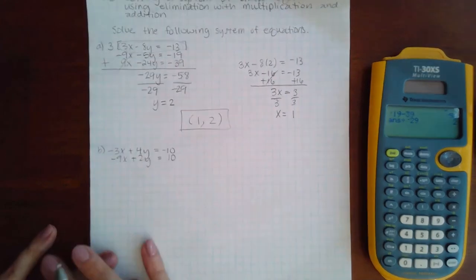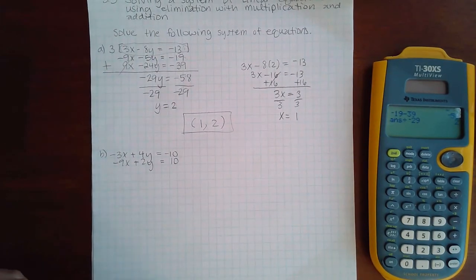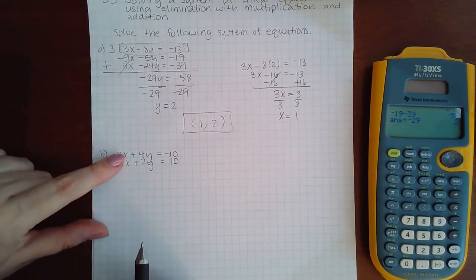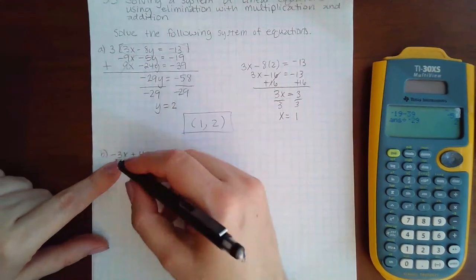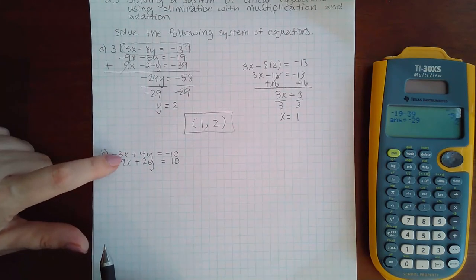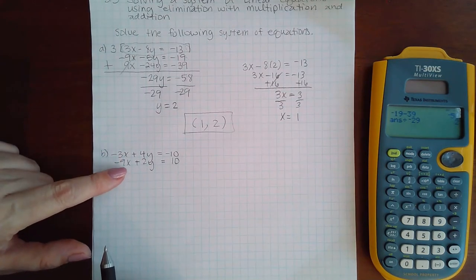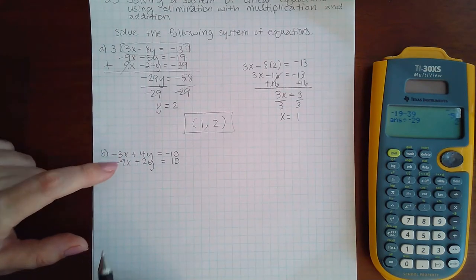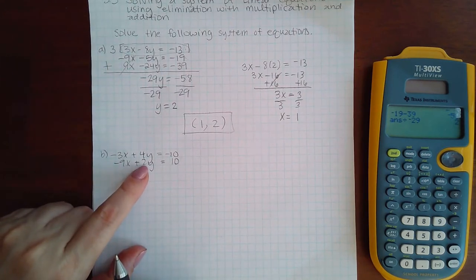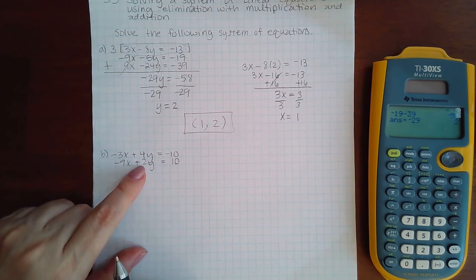Now over here, this one is interesting because there's two things you could do. If you wanted to eliminate the x's, you could multiply the top one by a negative 3 to turn negative 3 times a negative 3 into positive 9, which would be the opposite of this, or you could multiply the bottom equation by a negative 2 because a negative 2 times a positive 2 would make a negative 4, which would then be the opposite sign of that.